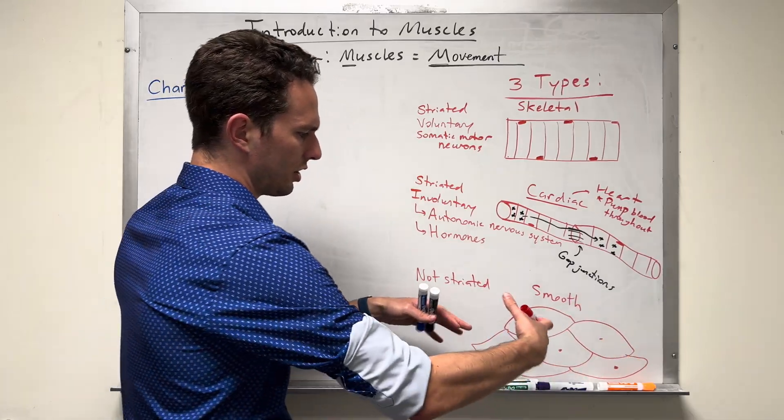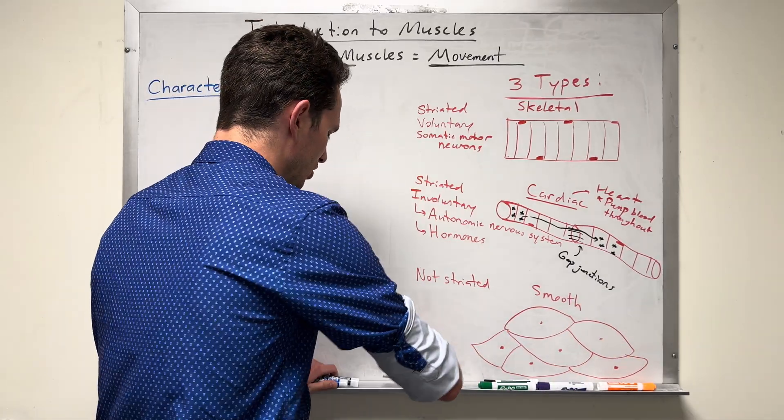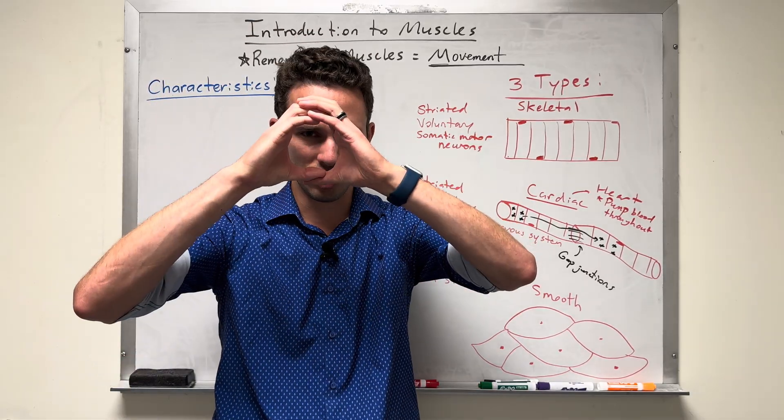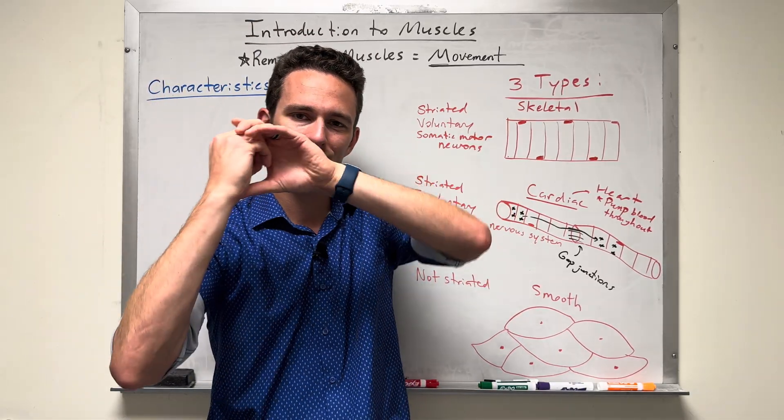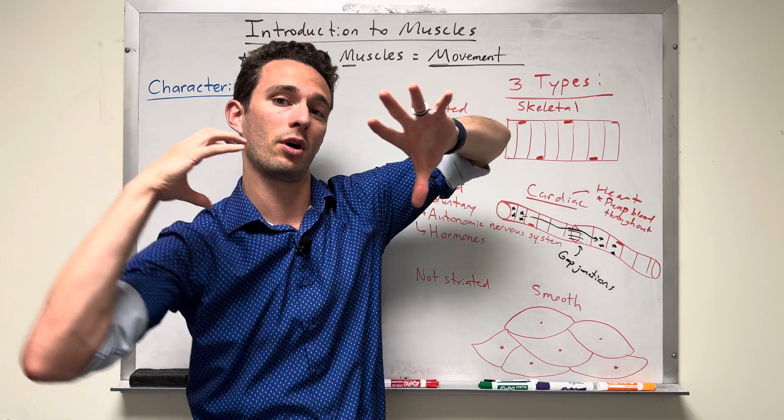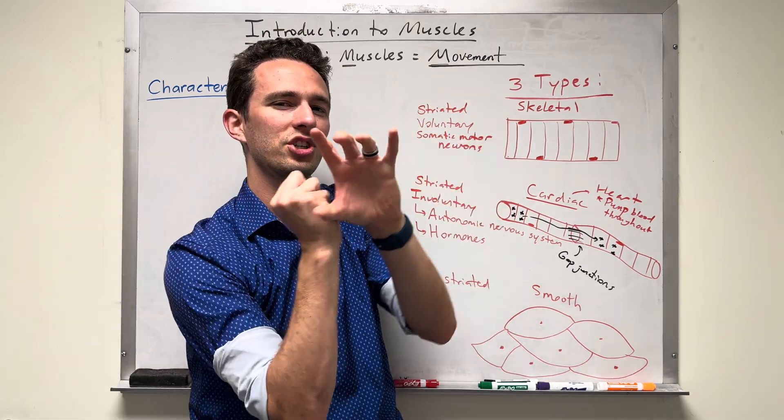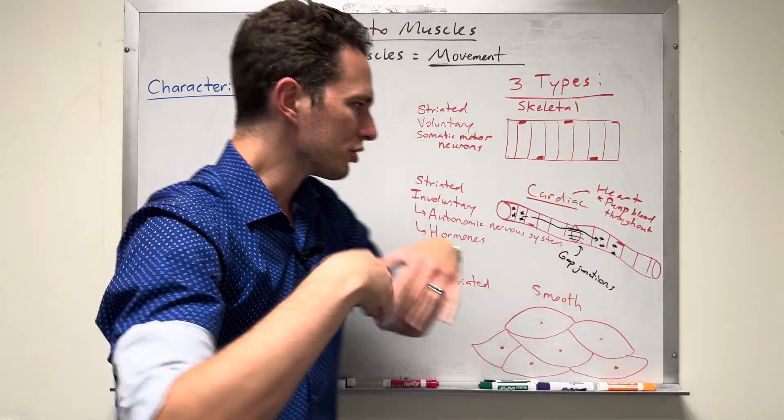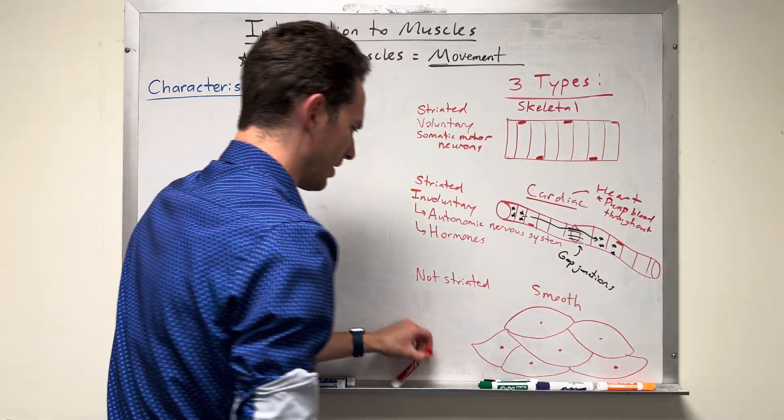Instead of contracting kind of like accordion style, straight in and out, we're actually going to contract it very similar to a snake. When you see a snake, you see kind of a tube contracting like this, and one part will relax, one part will contract, and it's kind of like you're pushing toothpaste to the end of the roll. So it's a little different than striated muscle.